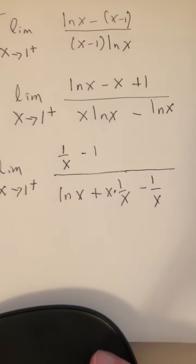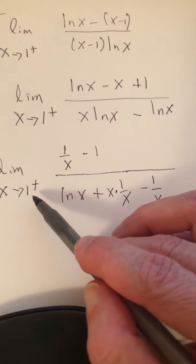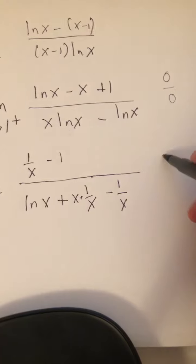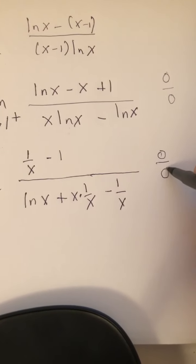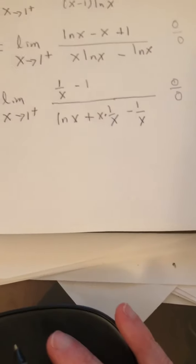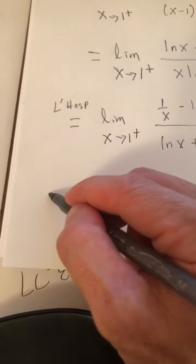So what happens now? x times 1 over x, of course, is 1. As x approaches 1 from the right, it looks like we have 0 over 0 again. So what we're going to do is we're going to apply L'Hopital's rule, hopefully just one more time.